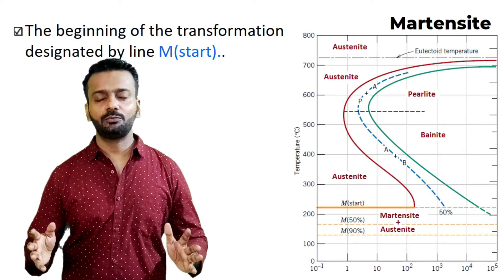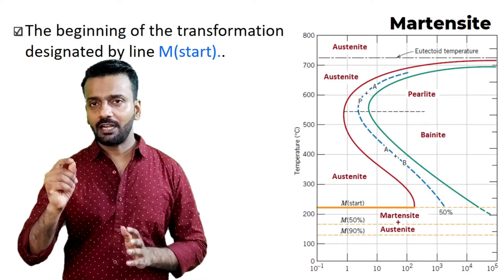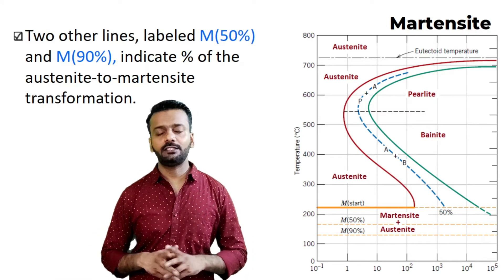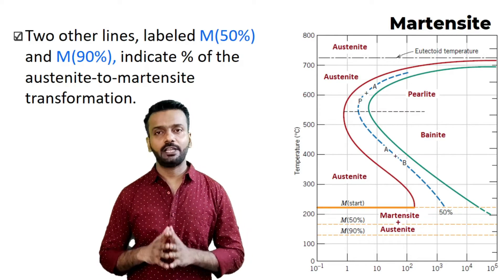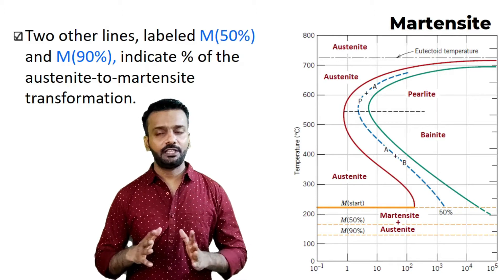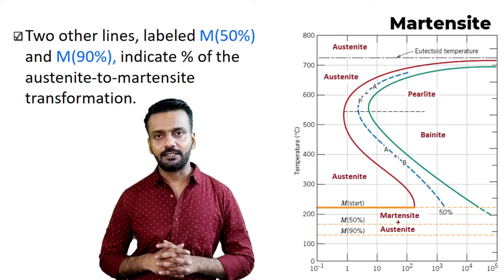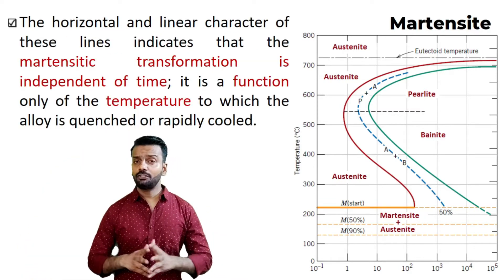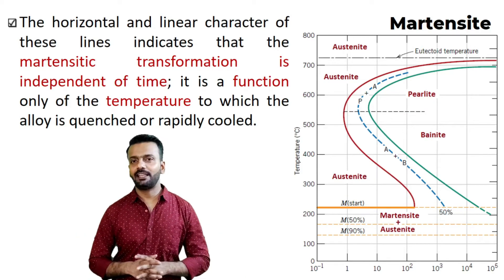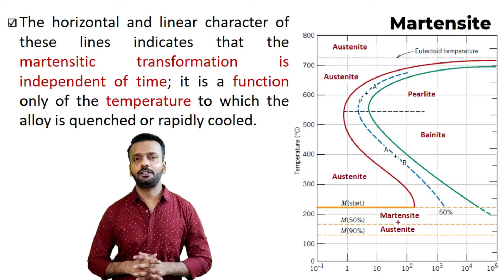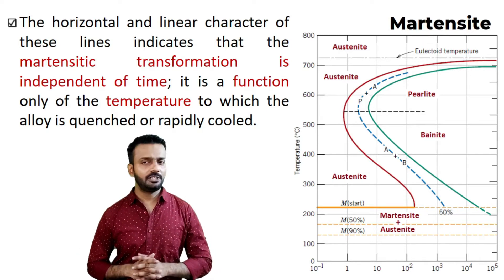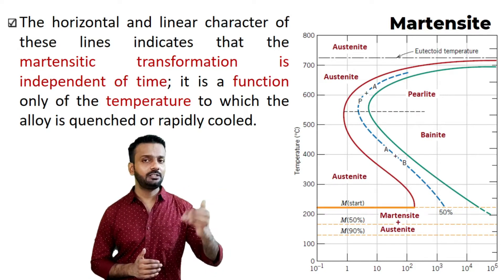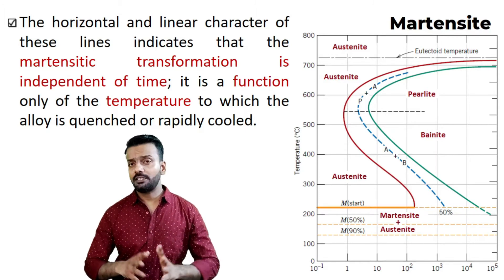The beginning of the martensitic transformation is shown by M-start on the TTT plot. The other two lines are M50 and M90 — that is, 50% and 90% of the martensitic transformation has taken place. So it goes from austenite directly to martensite. The temperature at which these lines are located will vary based on the composition of the alloy. The horizontal and linear characteristics of these lines clearly indicate that martensitic transformation is independent of time and is only a function of temperature. You have to cool it very rapidly, drastically changing the temperature from above 727°C to room temperature — it is not related to time, it is only related to temperature.